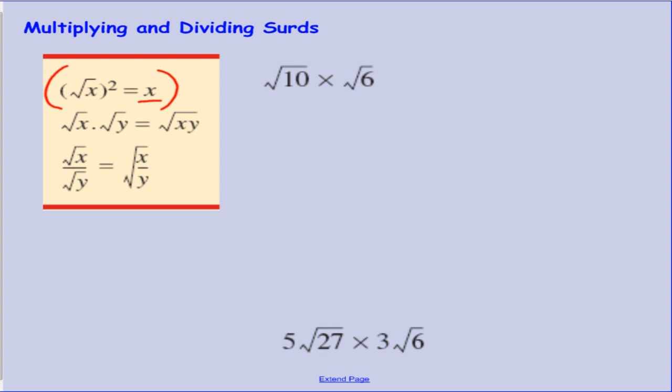The second identity we looked at, which helps us in simplifying surds, is the fact that if you have the square root of one number multiplied by the square root of another number, you can join those two factors together under the one square root sign. You can also work backwards. You can split a number into two factors, and then split the surd into two.